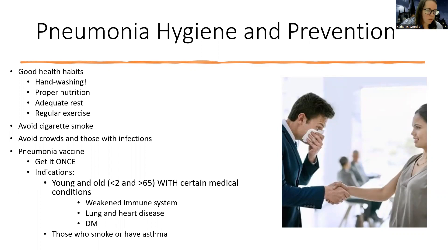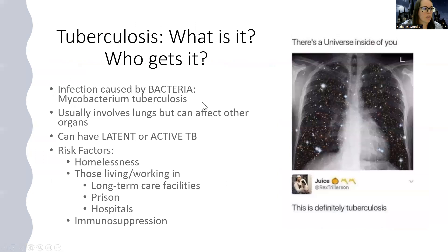There is a pneumonia vaccine — it's given once and helps prevent pneumonia. Those who typically get it are the very young, the very old, and those with certain medical conditions like weak immune systems, lung disease, heart disease, diabetes, or autoimmune conditions, as well as those who smoke or have asthma. As a nurse, you'll see screening prompts asking if your eligible patients have received their pneumonia vaccine.